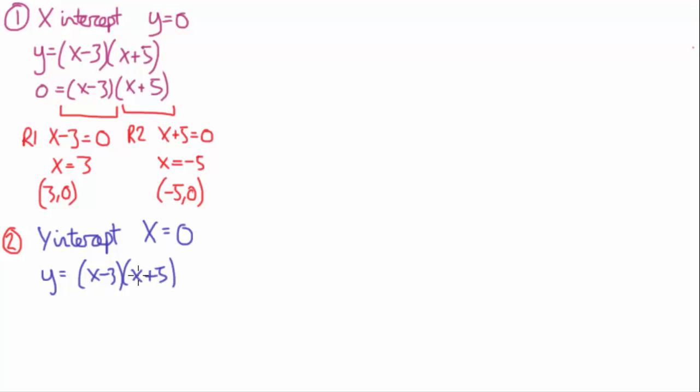But now we know that these x's are going to be 0, so y equals 0 minus 3, which is minus 3, 0 plus 5 is 5, so we've now known the y-intercept is minus 15. So the whole coordinate is x is 0, and it's minus 15.